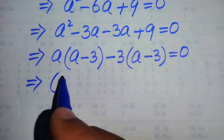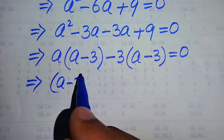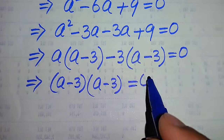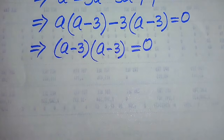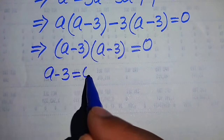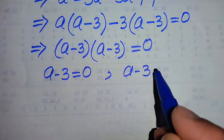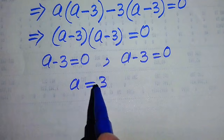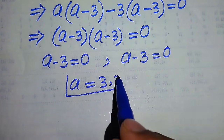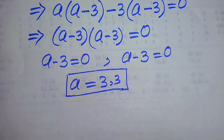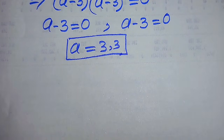In the next step we take common a minus 3 from both groups, and we get the remaining value (a minus 3). So the equation becomes (a minus 3)(a minus 3) equals 0. Dividing into two cases: a minus 3 equals 0 and a minus 3 equals 0. From both cases we get the same value a equals 3 — these are two repeated roots of the given equation.